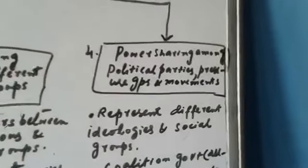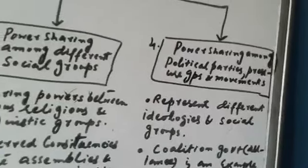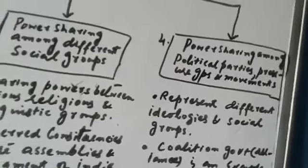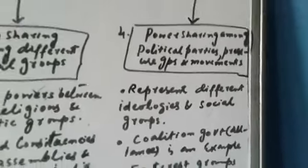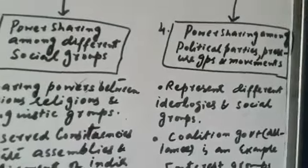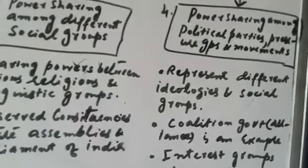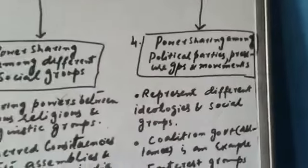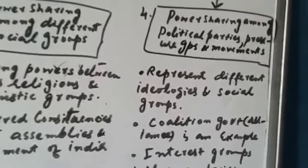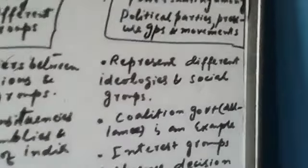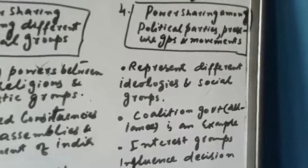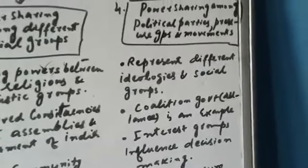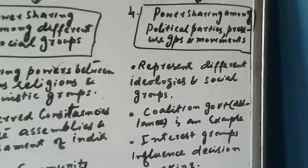Finally, power sharing among political parties, pressure groups, and movements. In a democracy, citizens have the freedom to choose their representatives from various contenders for power. This competition ensures that power does not remain concentrated. Power is distributed, and sometimes shared among different political parties through coalition or alliance governments — for example, the National Democratic Alliance with BJP and many other parties.